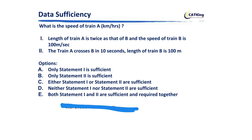The next question asks: what is the speed of train A in kilometers per hour? Statement one says the length of train A is twice that of train B, and the speed of train B is 100 meters per second. Knowing the length ratio and one speed alone cannot give the speed of the other — A and C cannot be the answer. Statement two says train A crosses train B in 10 seconds, and the length of train B is 100 meters. Statement two alone is also not sufficient.